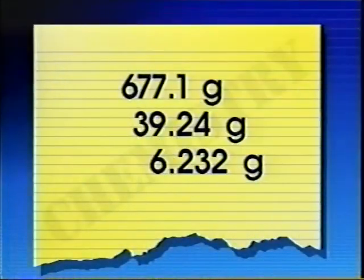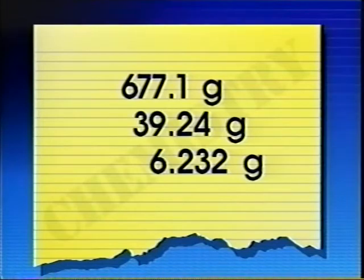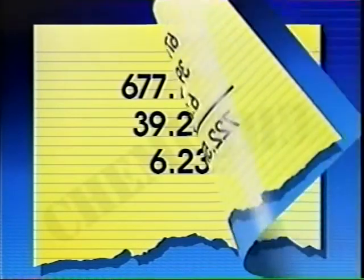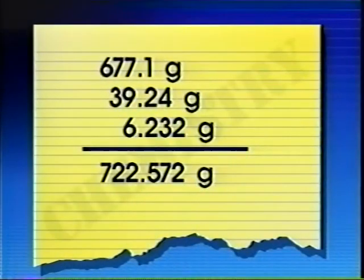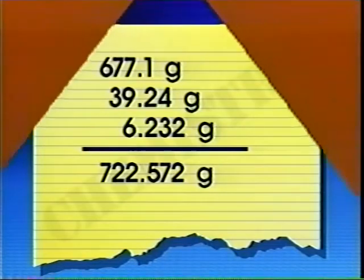Let us suppose that to calculate the result of an experiment we have to add these numbers. The sum has three decimal places. This means that this sum has a certainty greater than that of the least certain measurement, which is 677.1 g.